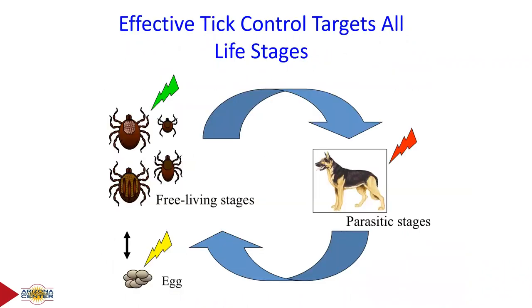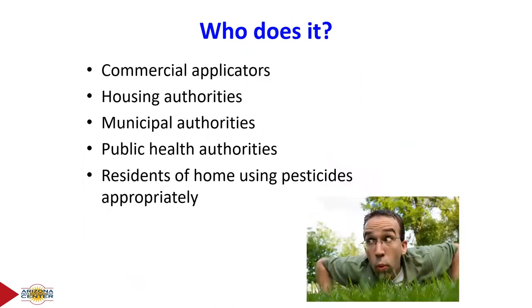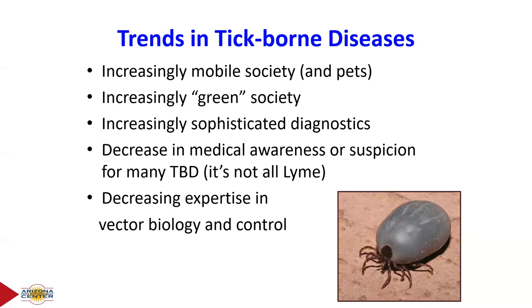Effective tick control targets all life stages — the free-living stages, the eggs, and the parasitic stages on the host. Who does tick management? Commercial applicators, housing authorities for public housing, municipal authorities for parks and recreational areas, public health authorities in case of tick-borne disease outbreaks, and residents themselves using pesticides and other methods appropriately.